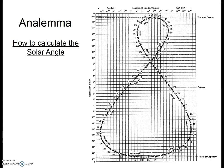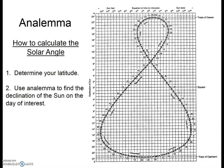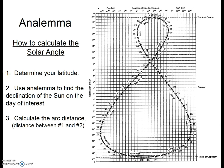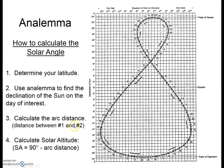So how do we calculate the solar altitude or solar angle? There are four steps. First, determine your latitude — either given in a problem or looked up on a map. Second, use the analemma to find the declination of the Sun on the day of interest. Third, calculate the arc distance, which is the distance in degrees between your latitude and the declination of the Sun. Fourth, calculate the solar altitude using the formula: solar altitude equals 90 degrees minus the arc distance.